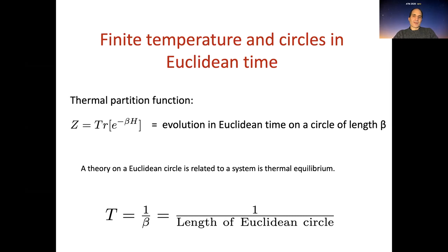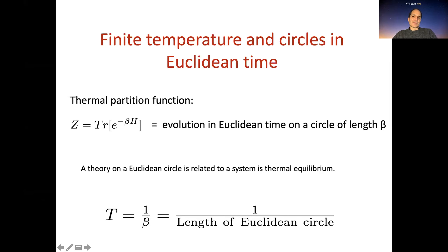This is valid for any quantum system, say a harmonic oscillator, and it's valid for quantum field theory. If we have a thermal quantum field theory, we can take that theory on a circle with Euclidean time of length beta and then some spatial dimensions. The point is that a theory on a Euclidean time circle is related to a system in thermal equilibrium, where the temperature is one over the length of the circle.